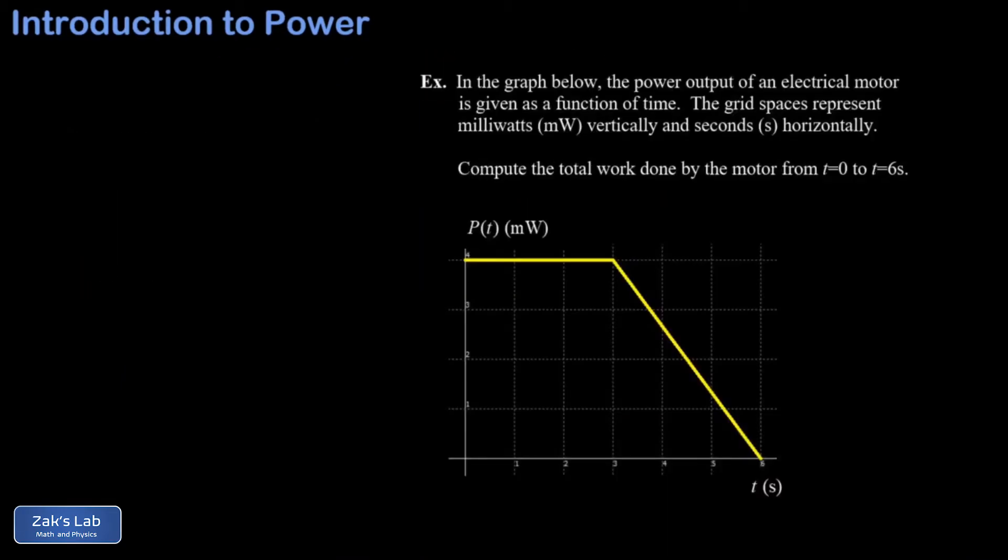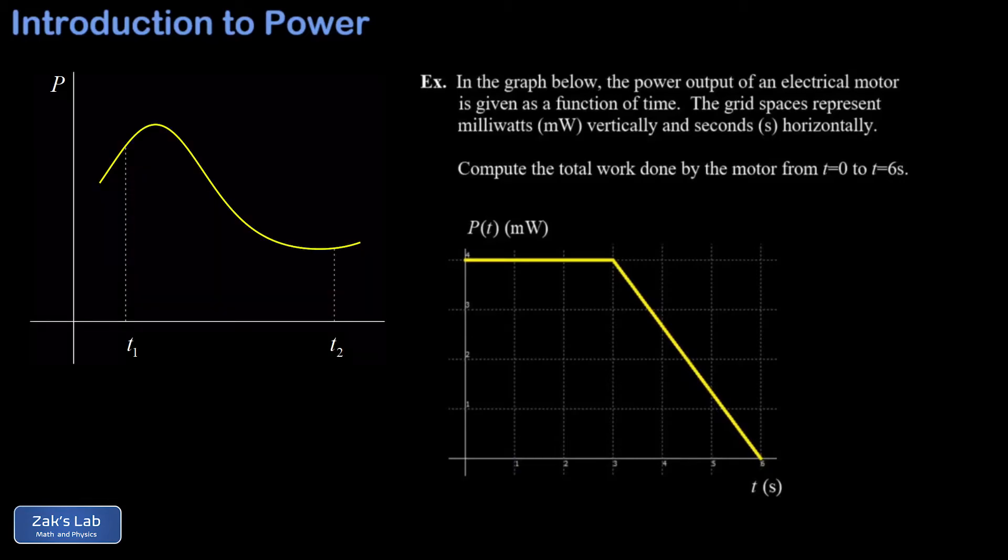Next we want to look at how to interpret a graph of power versus time. In the picture we have the power output for some system plotted as a function of time. The area has a nice interpretation here. If we take a tiny rectangular slice of the area under the curve at a time t, the height at that time is P(t)—the power at that moment—and the width is a small increment delta t.